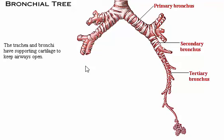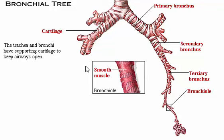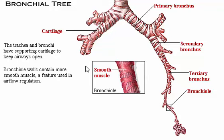The trachea and all the bronchi have supporting cartilage which keeps the airways open. Air flows deeper into the lungs as the tertiary bronchi branch repeatedly into smaller bronchi, which eventually branch into bronchioles. Bronchioles lack cartilage and contain more smooth muscle in their walls than the bronchi. These features allow airflow regulation by altering the diameter of the bronchioles.